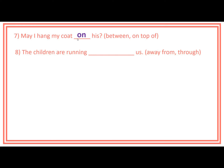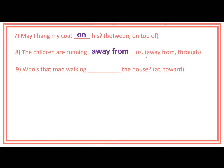Number 8: The children are running ___ us. The prepositions inside the brackets are away from and through. Answer: The children are running away from us. Number 9: Who's that man walking ___ the house? The prepositions inside the bracket are at and toward. Answer: Who's that man walking toward the house?